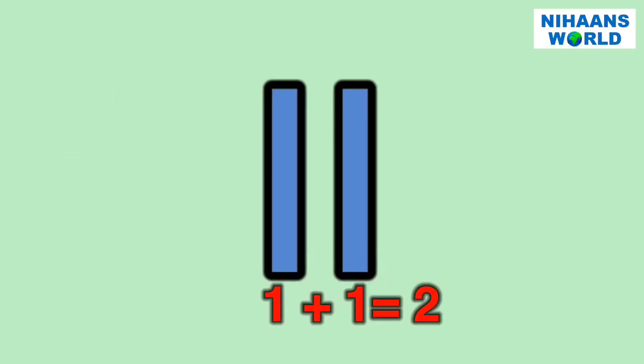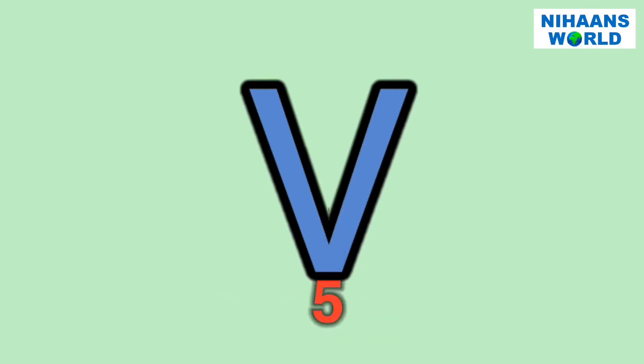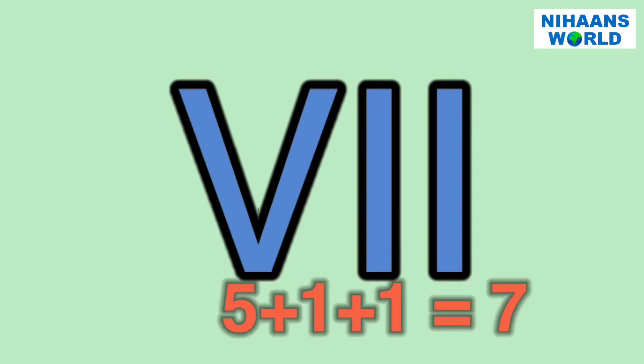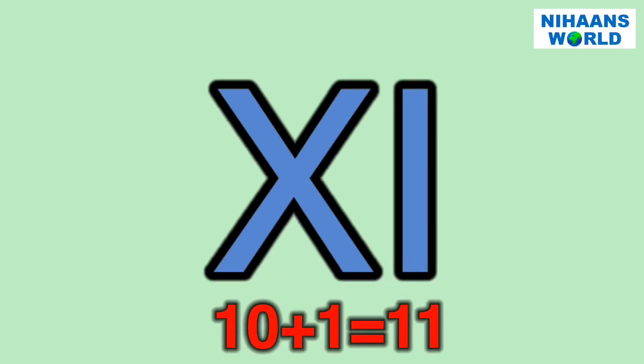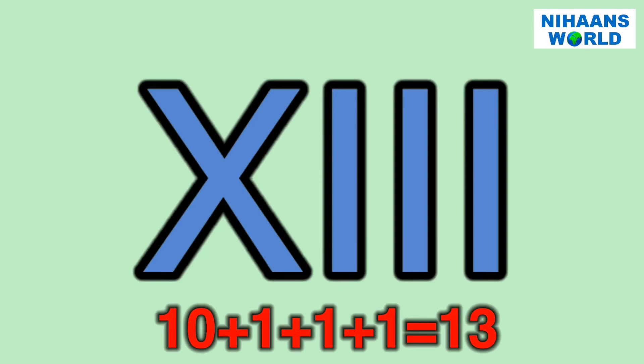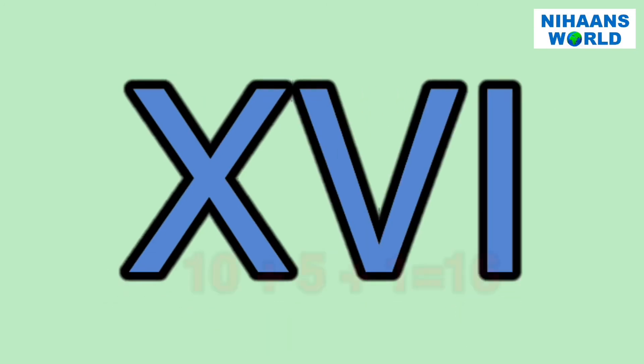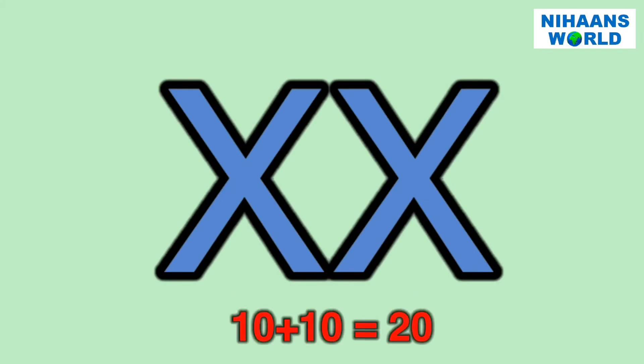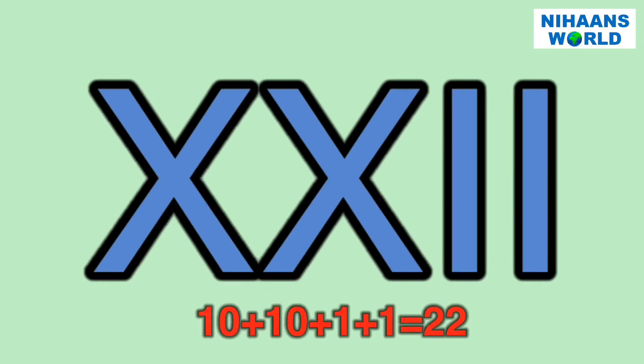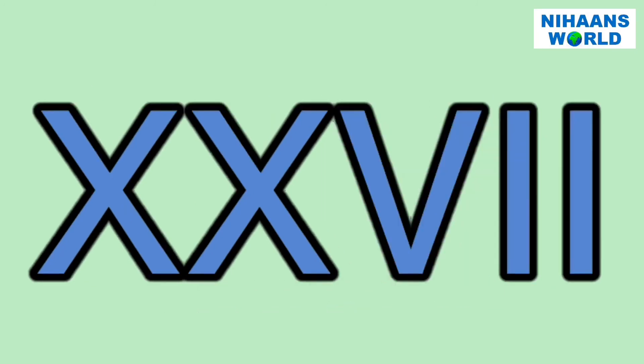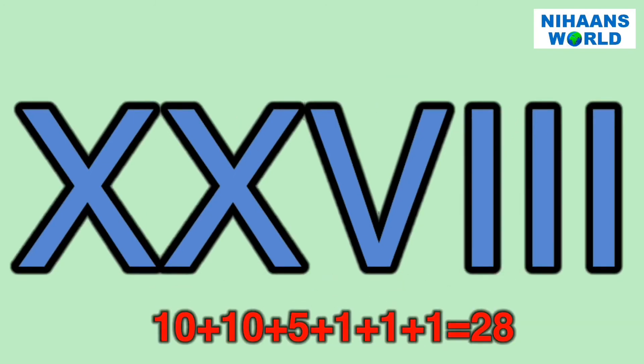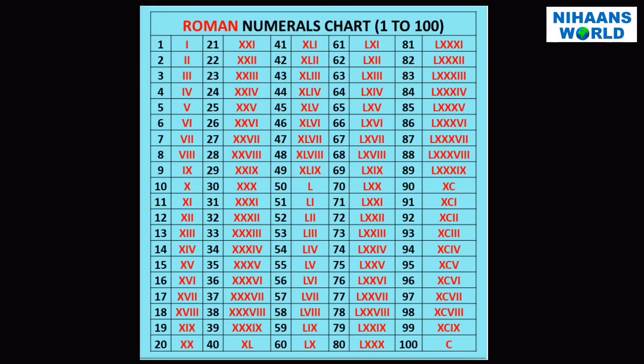Let's do practice Roman numerals one to thirty. One, two, three, four, five, six, seven, eight, nine, ten, eleven, twelve, thirteen, fourteen, fifteen, sixteen, seventeen, eighteen, nineteen, twenty, twenty-one, twenty-two, twenty-three, twenty-four, twenty-five, twenty-six, twenty-seven, twenty-eight, twenty-nine, thirty. Let's look at Roman numerals calendar from one to one hundred.